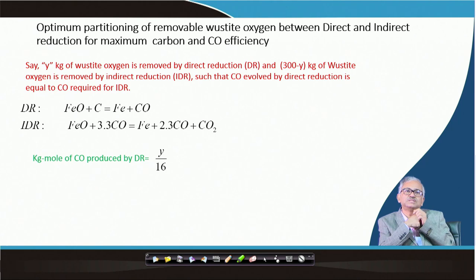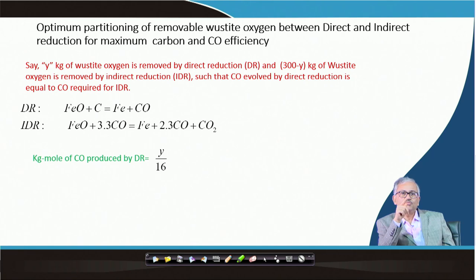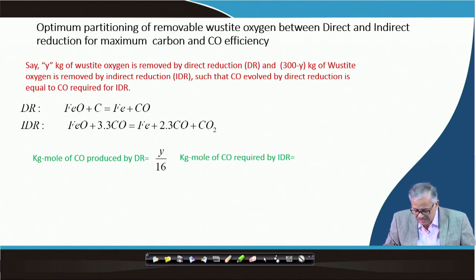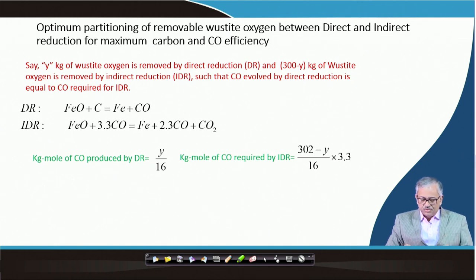How much CO is required for indirect reduction? By indirect reduction, (302 − y)/16 kg-moles of oxygen is to be removed. From indirect reduction, to remove 1 kg-mole of oxygen from wustite, you require 3.3 kg-moles of CO. So kg-moles of CO required by indirect reduction = (302 − y)/16 × 3.3. Under optimum condition, these two quantities are equal: y/16 = (302 − y)/16 × 3.3. That is the maximum utilization condition.